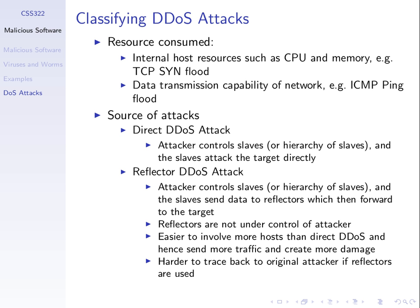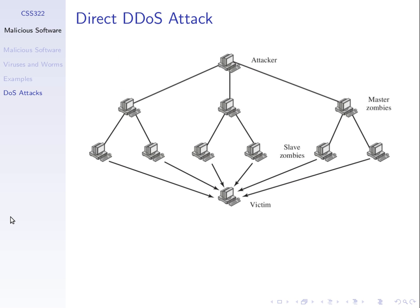Generally it's easier to get reflectors than slaves. So a reflector distributed denial of service attack is generally better than a direct attack — better because we can get more packets being sent to the target, and better because it's harder to trace back. One of the ways to respond to denial of service attacks, even if you cannot prevent them, is to trace back and find out who did it, then take legal or other measures to prevent future attacks.